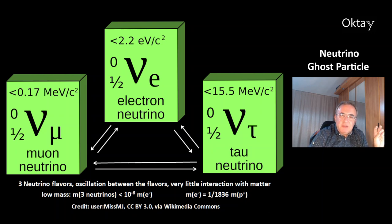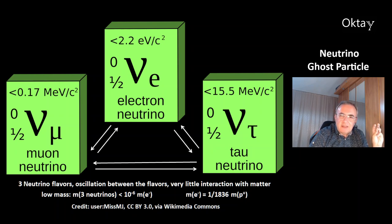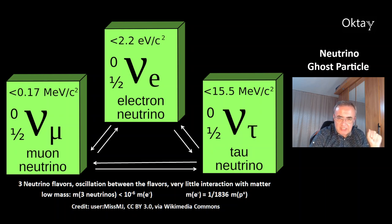The mass of the neutrinos is not exactly known. However, there's an upper limit. All three neutrino flavors combined have a mass that's less than one millionth of the electron mass. To give you an idea about the mass of the electron, it's 1/1836 of a proton mass.